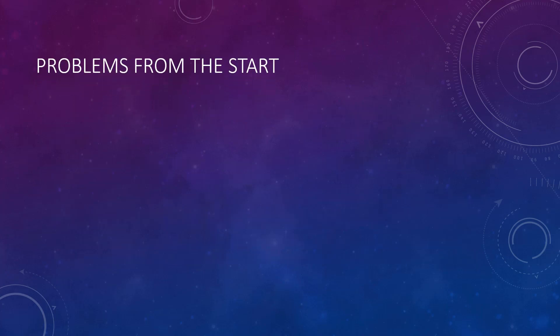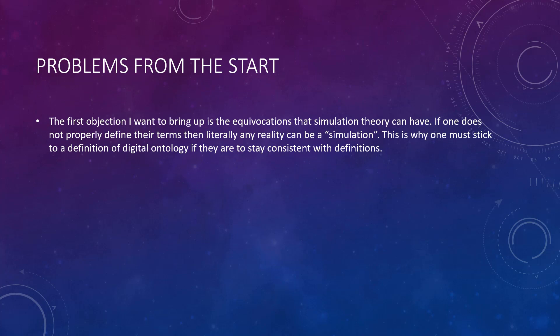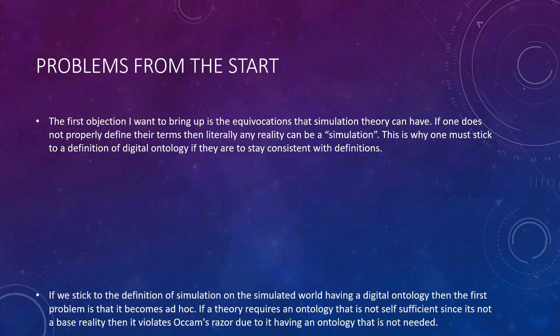So there are some problems from the start. The first objection I wanted to bring up is the equivocations that simulation theory can have. If one does not properly define their terms, then literally any reality can be a quote-unquote simulation. This is why one must stick to a definition of digital ontology if they are to stay consistent with definitions.